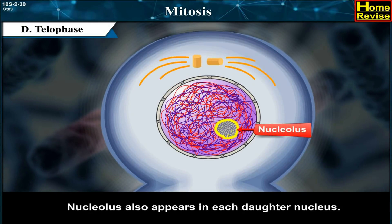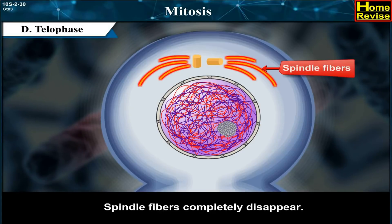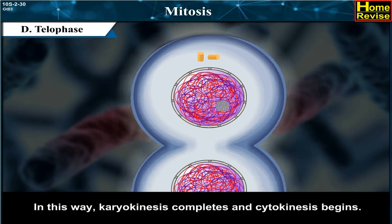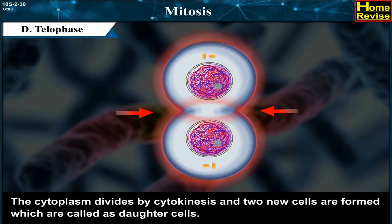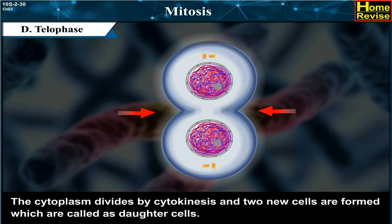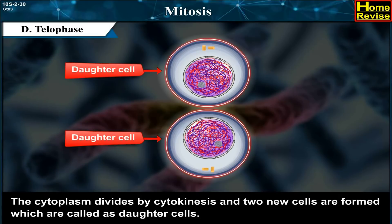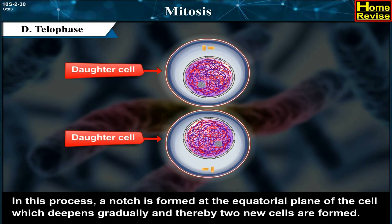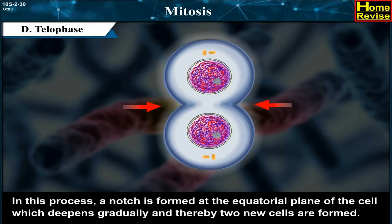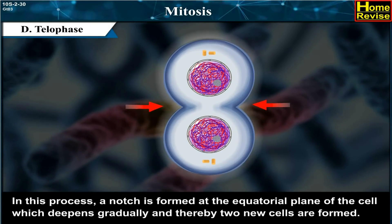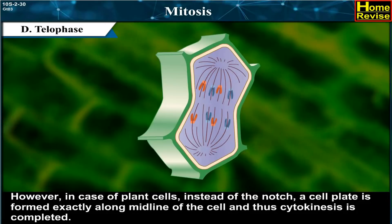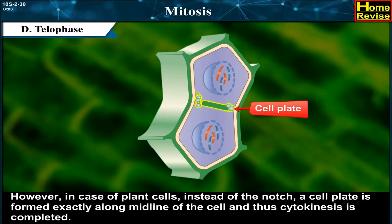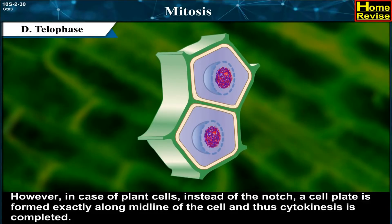In Telophase, a nucleolus also appears in each daughter nucleus and spindle fibres completely disappear. In this way, karyokinesis completes and cytokinesis begins. The cytoplasm divides by cytokinesis and two new daughter cells are formed. A notch is formed at the equatorial plane of the cell, which deepens gradually to form two new cells. However, in plant cells, instead of a notch, a cell plate is formed along the midline of the cell, completing cytokinesis.